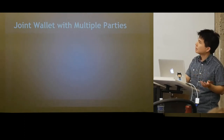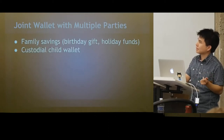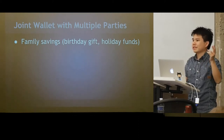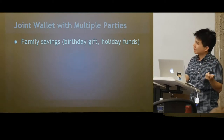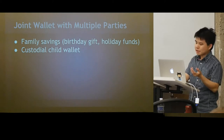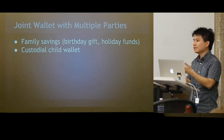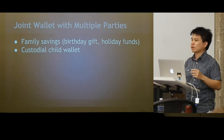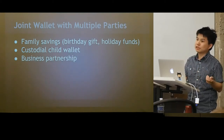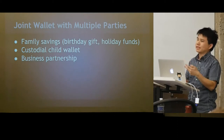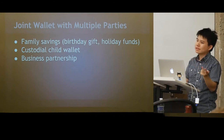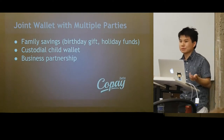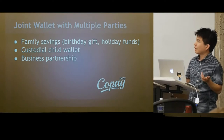The next model is a multi-sig joint wallet with multiple parties. For example, you can use 2-of-4 multisig for family savings — four family members save up and two co-sign to buy something on Overstock. You can have a custodial child wallet where the child, mother, and father share a wallet and the child asks a parent to co-sign when buying books. You can also have a business partnership where a 2-of-3 quorum is required to spend. BitPay's Copay wallet is a great implementation of this.